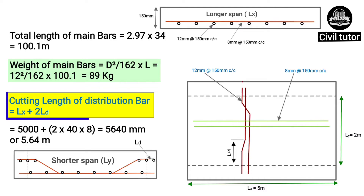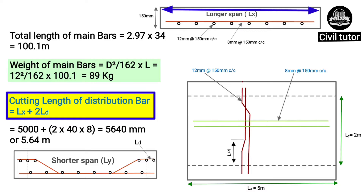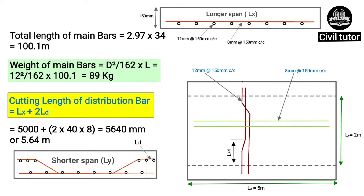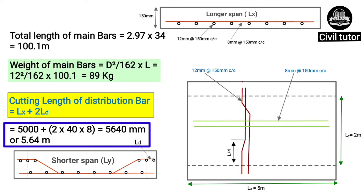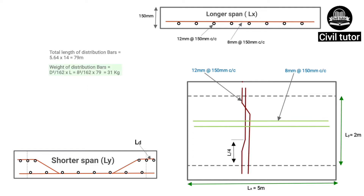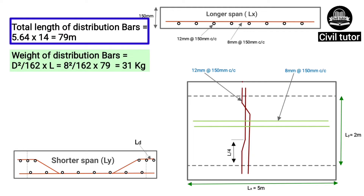Now we need to calculate the cutting length of the distribution bar, which = span Lx + development length on each end (2 × Ld). Lx is 5000mm and development length = 40D, where D is the dia of the distribution bar = 8mm. On substituting these values, the cutting length of the distribution bar = 5640mm or 5.64m. Total length of distribution bars = 5.64m × 14 = 79m.